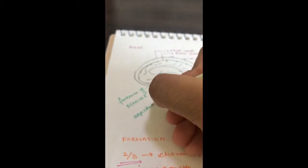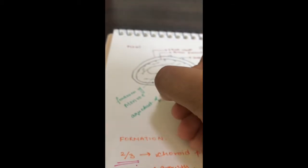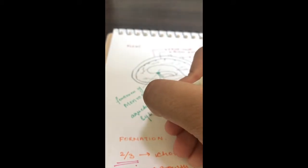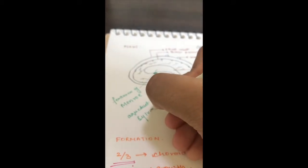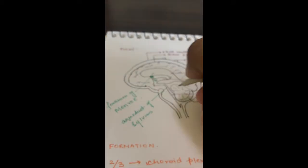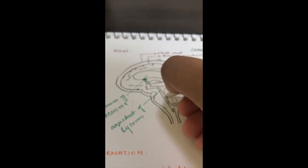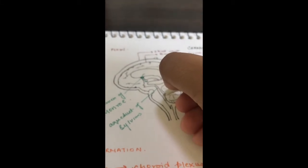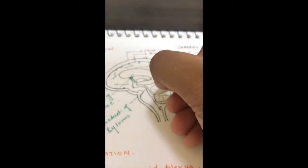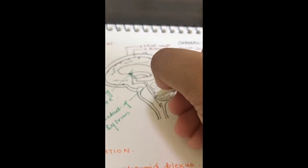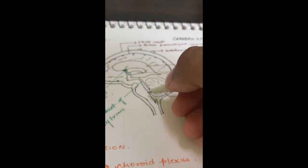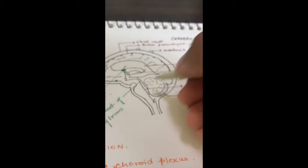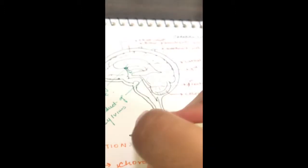From the third ventricle, CSF passes through the aqueduct of Silvius into the fourth ventricle.